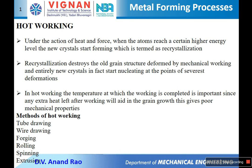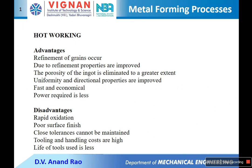Some of the hot working methods are tube drawing, wire drawing, forging, rolling, spinning, and extrusion. Advantages of hot working include refinement of grains, which improves properties. Porosity of the ingot is eliminated to a great extent due to higher temperature and application of higher forces. Uniformity and directional properties are improved. It is fast and economical. Power required is less because the material is heated above the recrystallization temperature.